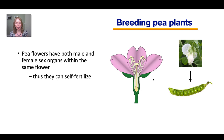Pea plants had some additional helpful features as model organisms. Their flowers have both the male and female sex organs within the same flower. This portion at the base of the flower is the female sex organ — that's where the eggs are. And these structures making the yellow pollen are the male sex organs, and the pollen has the sperm cells inside. Since they have both male and female in the same flower, it means they can self-fertilize. The pollen can directly go onto the female sex organ and fertilize the eggs to make the seeds.